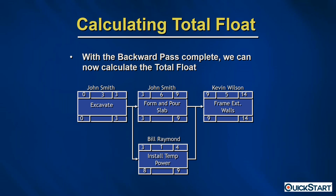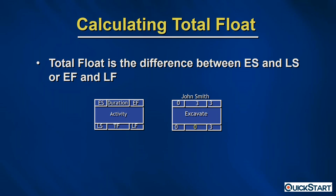Completing the backward pass allows us to calculate total float. Total float is the difference between early start and late start, or early finish and late finish — you can calculate it either way. For example, zero minus zero equals zero, or three minus three also equals zero. We now perform this calculation for each one of these tasks.